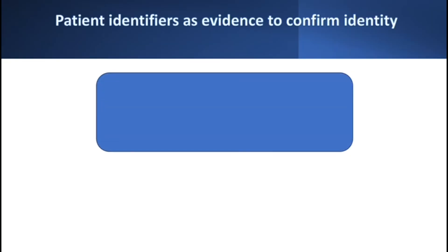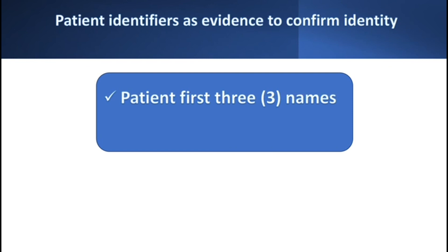Patient identifiers used as evidence to confirm identity are: the patient's first and last names, medical record number, and date of birth.